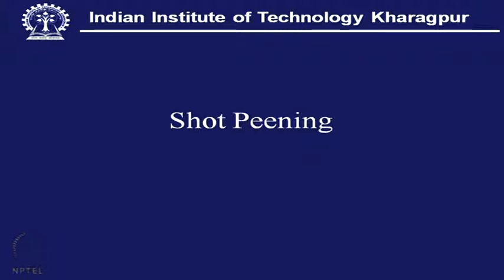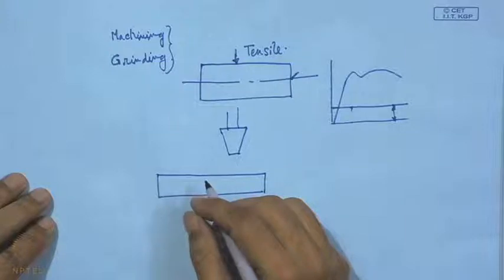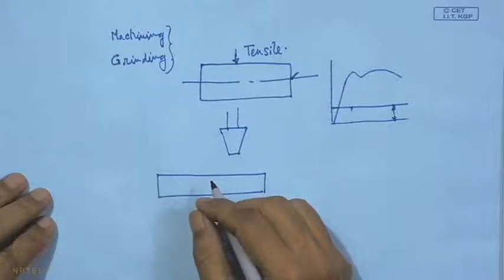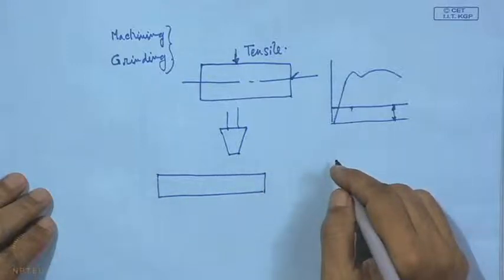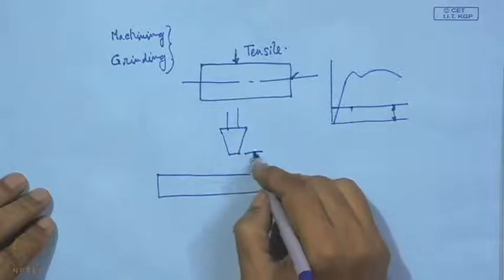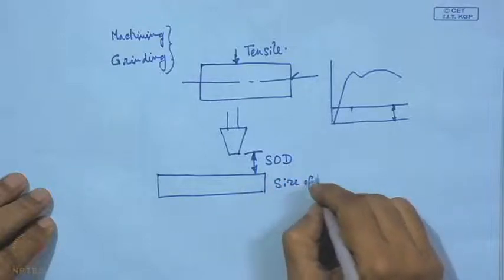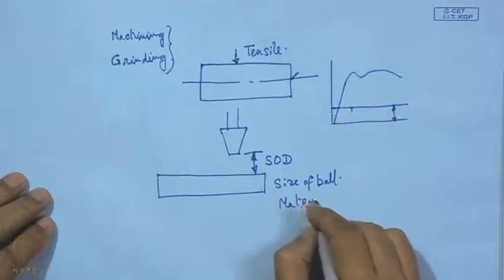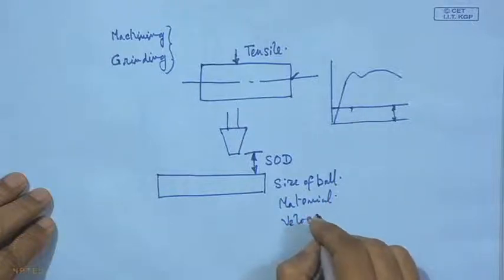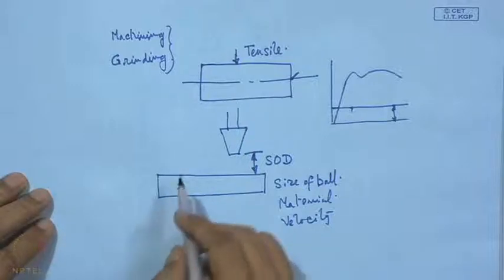In shot peening, glass balls, steel balls, or similar materials with a size ranging from a fraction of a millimeter to a few millimeters are directed through a nozzle to impinge on the surface. Key parameters include the standoff distance (SOD), size of the ball, material of the ball, velocity of impact, and incidence angle. All these factors determine the final outcome on the surface.